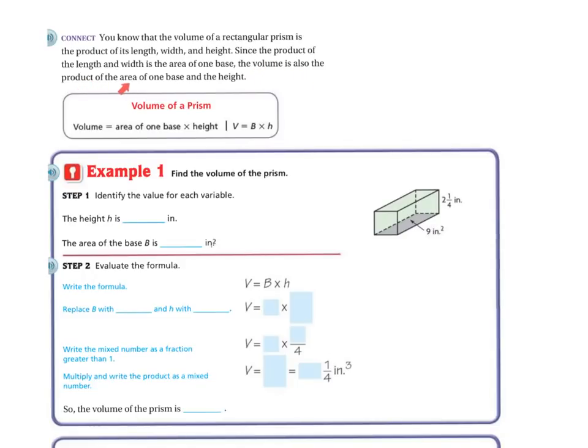Since the product of the length, width, is the area of one base, the volume is also the product of the area of one base and the height. So the volume equals the area of one base times the height.